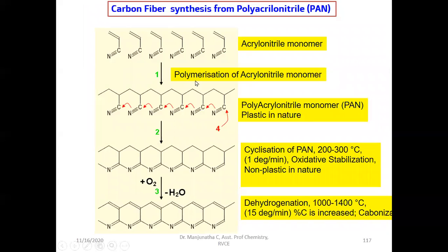Let us look at the preparation of carbon fiber. Carbon fiber is prepared from various carbon sources, but in most cases they use polyacrylonitrile (PAN) polymer. PAN is actually a polymer obtained from the acrylonitrile monomer. This is the acrylonitrile monomer with its nitrile group; when acrylonitrile is polymerized, we get PAN. To prepare carbon fiber, we start with this PAN polymer as the precursor.